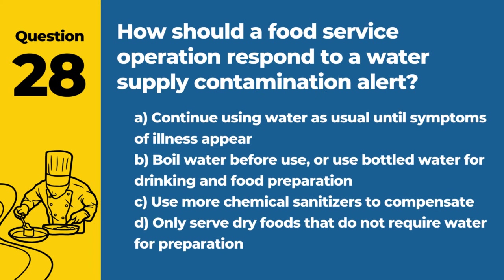Question 28. How should a food service operation respond to a water supply contamination alert? Answer: B. Boil water before use, or use bottled water for drinking and food preparation. This precaution helps protect against consuming or using contaminated water in food preparation.